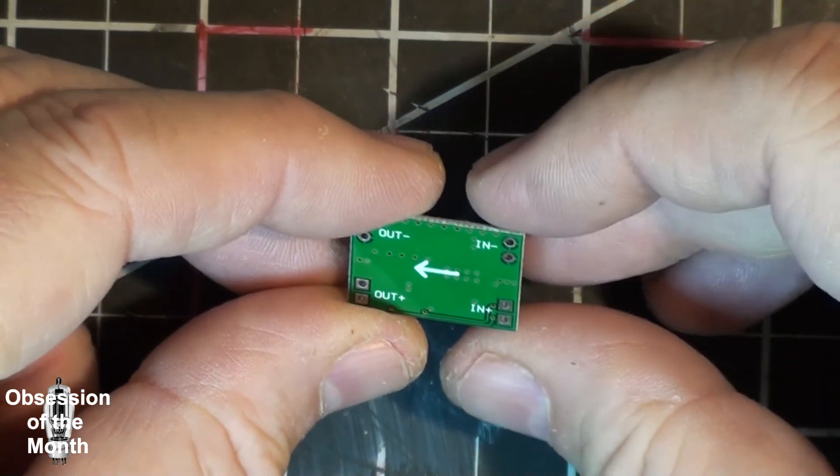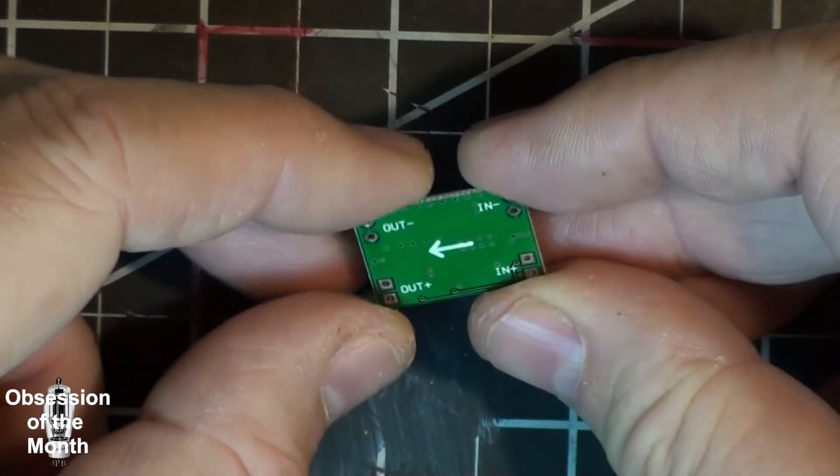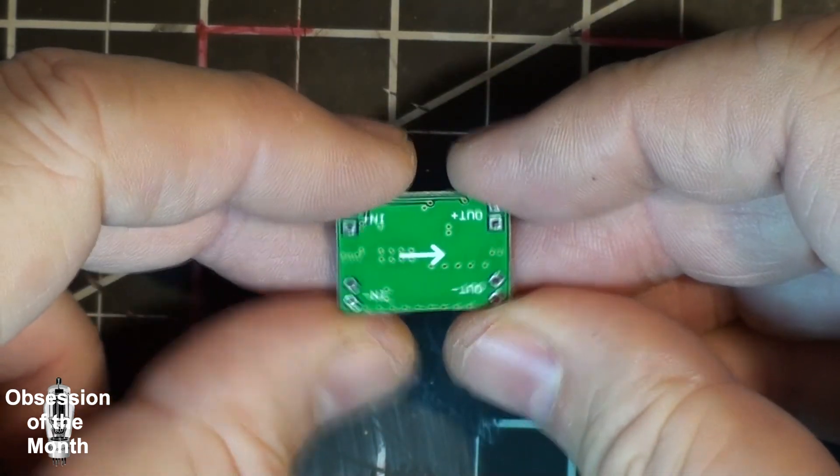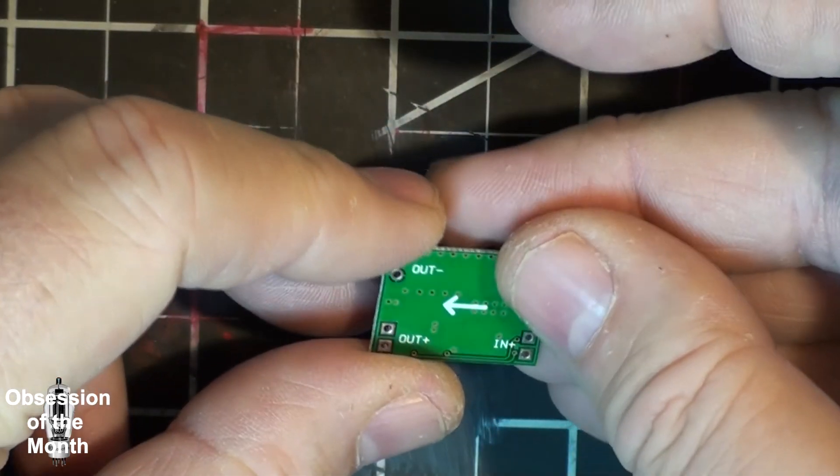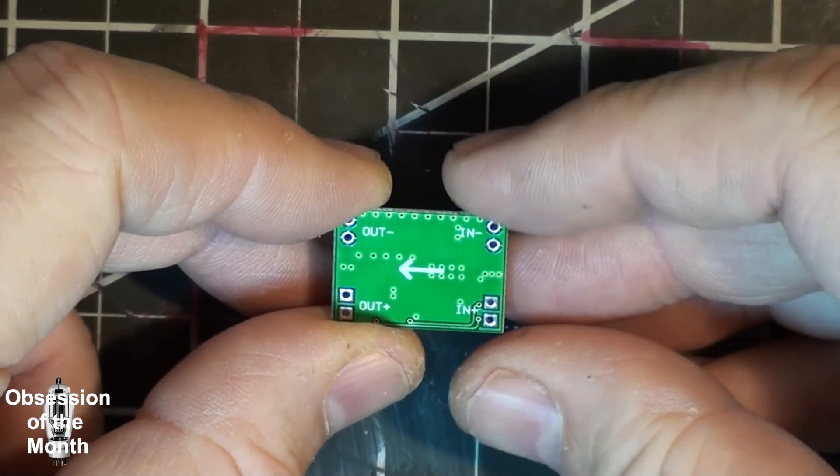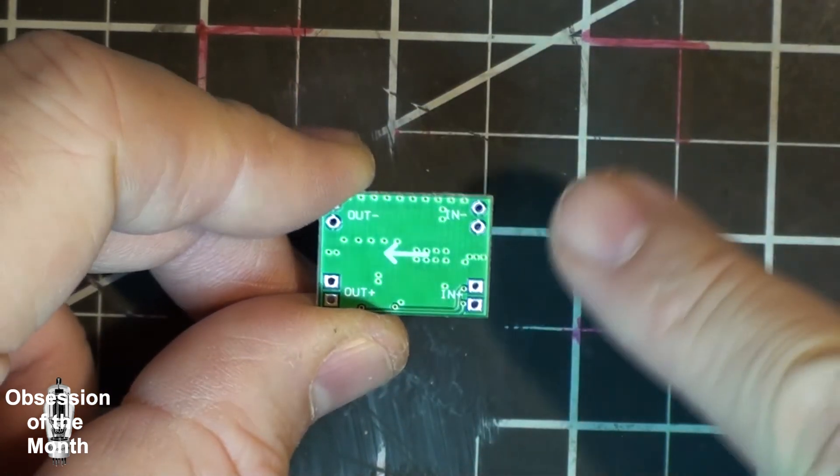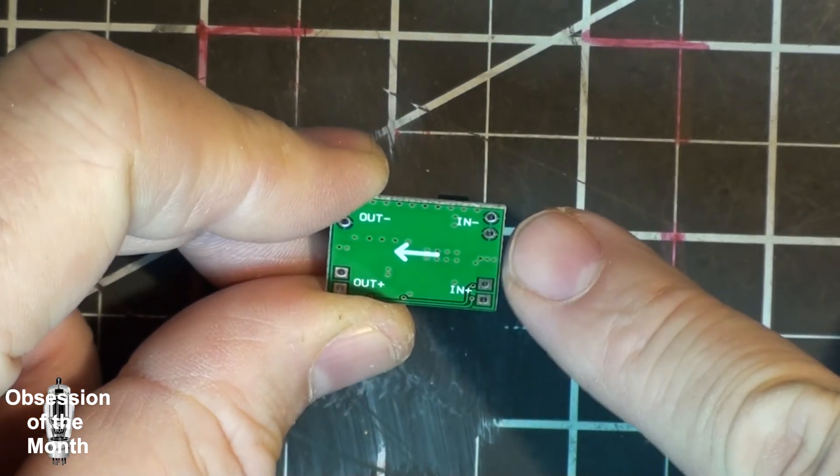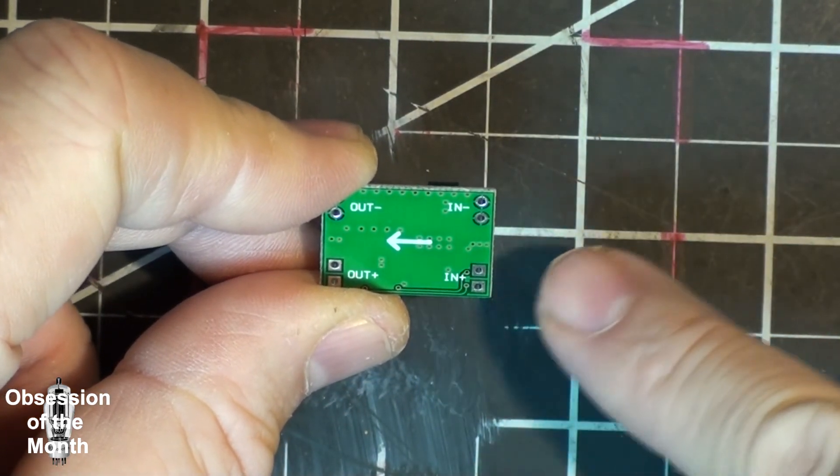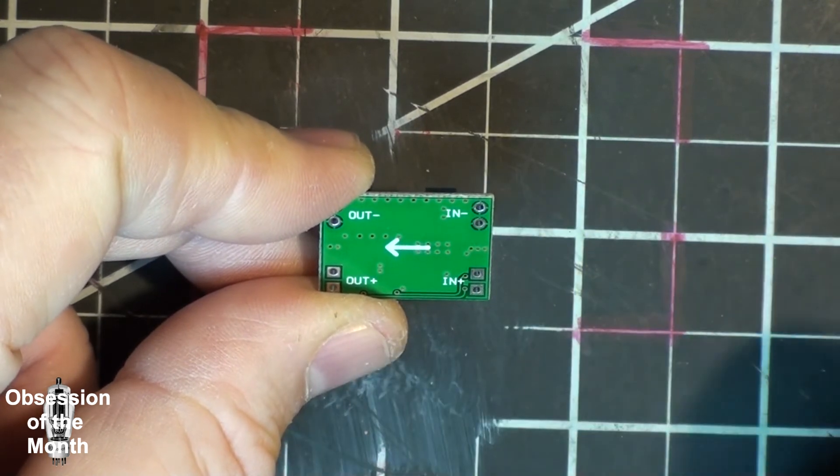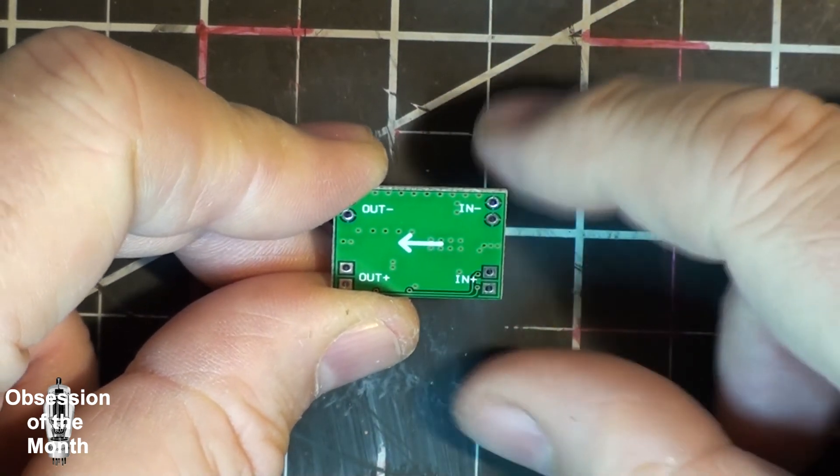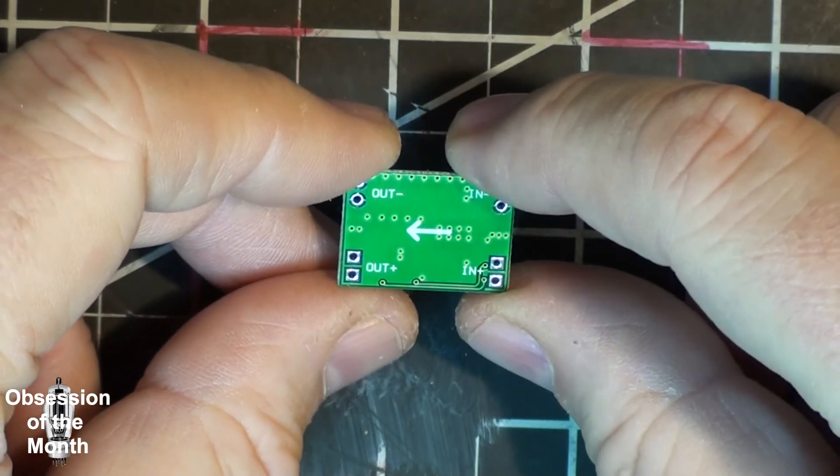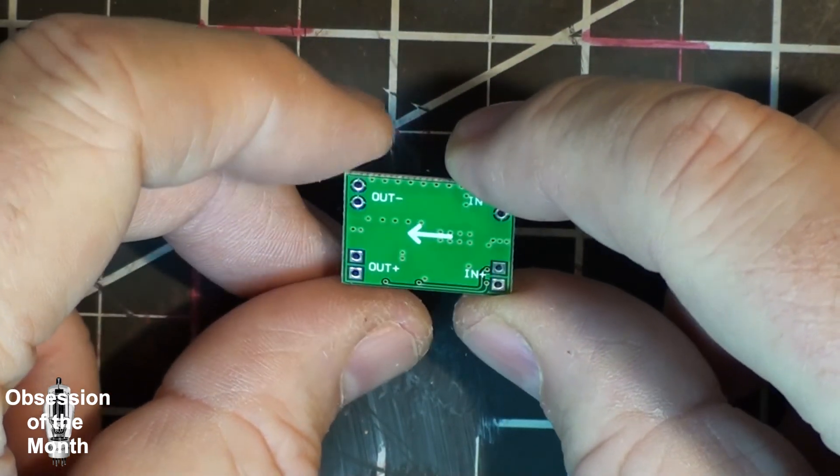And on the back, let's see we have our input and output, and they have two sets of holes on each one. I'm not sure exactly why, possibly you can use one for mounting maybe.